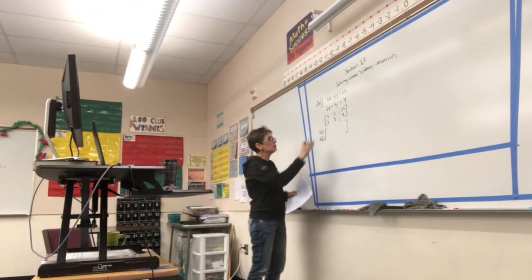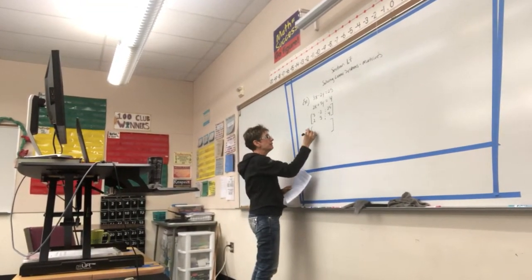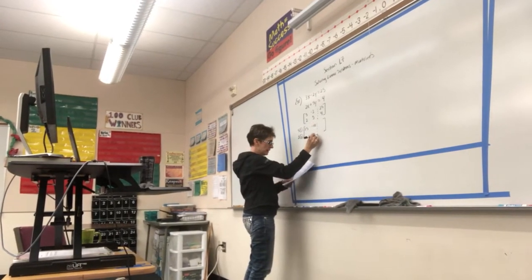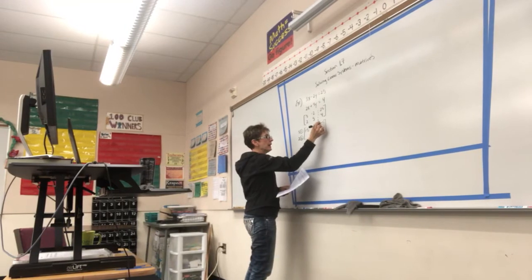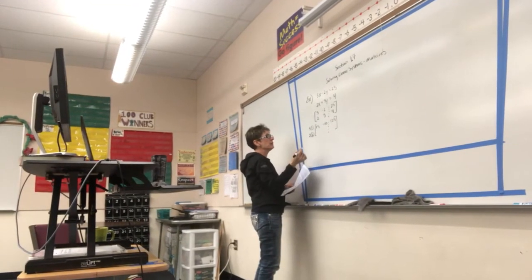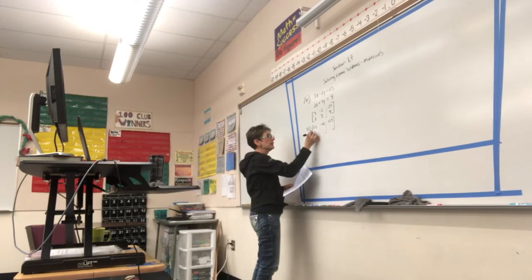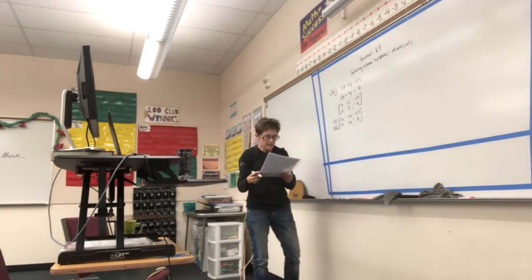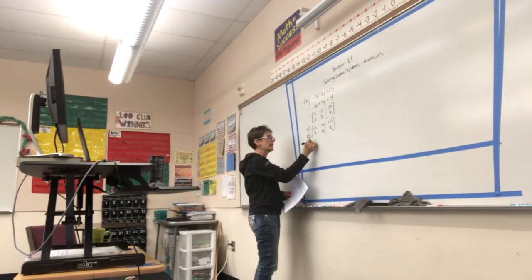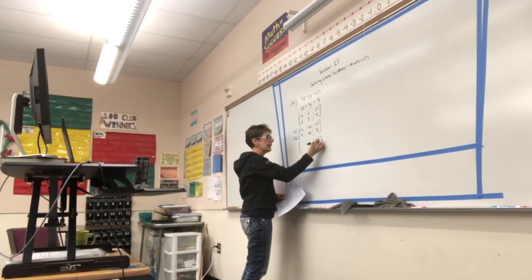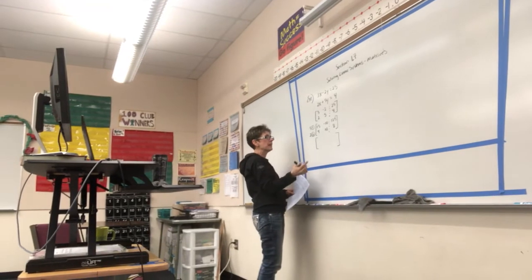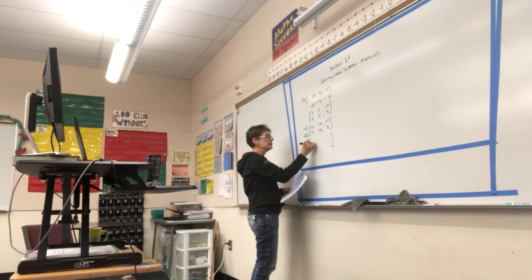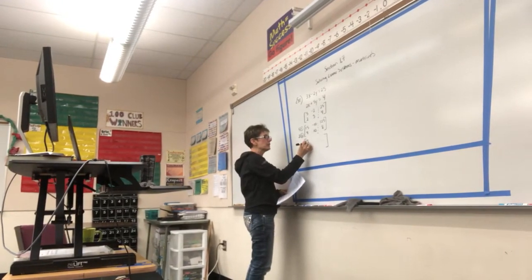When I multiply every number in the top row by 5, I get 15, negative 10, and 125. And then, on the second line down, I'm going to get, when I double it, 4, positive 10, and positive 8. Notice that the reason why I did this is because when I add these two equations together, negative 10 plus 10 becomes 0.